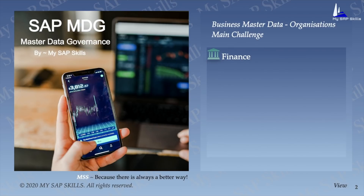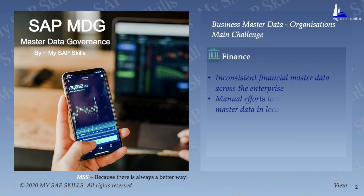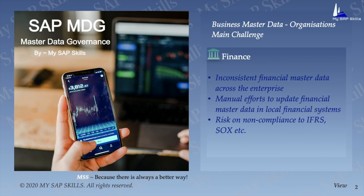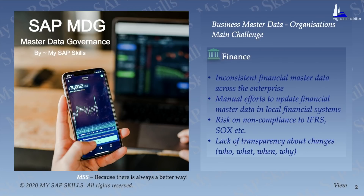In finance management, every finance officer has to deal with inconsistent financial master data across the enterprise. They have to put lots of manual efforts to update financial master data in local financial systems. They also have huge risk of non-compliance to IFRS and SOX, and lack of transparency about master data changes — who changed the data, what was changed, when it was changed, and most importantly, why — are leading challenges in maintaining business master data.